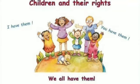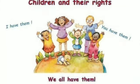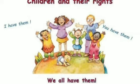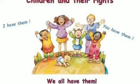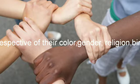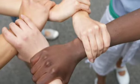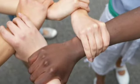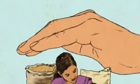The UNCRC, that is the United Nations Convention on the Rights of the Child, applies to all human beings below the age of 18, and these rights apply to every child irrespective of their color, gender, language, religion, wealth, birth status and other status.